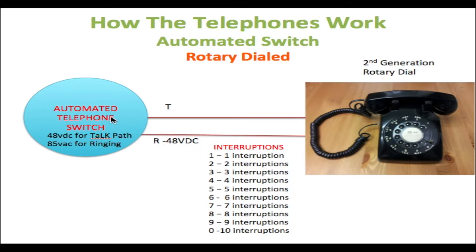For the DC voltage of 48 volts, there's no DC current flowing through the line when the phone is on-hook, because there's a switch inside the phone that opens the line so there's no current flow. But once you go off-hook, you close that circuit within the phone, allowing current to flow from the switch right through the telephone and back to the switch on the return path.